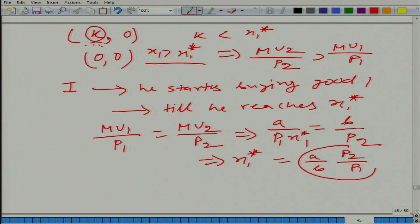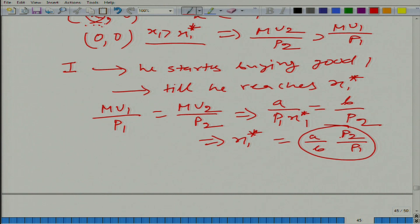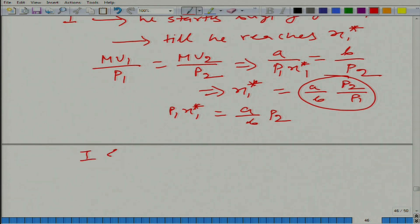So unless he accumulates this amount of good 1, he will not buy good 2. And to buy this much of good 1, how much income does he need? p1*x1 star, and that is a by b*p2. So what we are saying: if income is less than a by b*p2 and of course greater than 0, then he will buy - in this case x1 star is going to be equal to i by p1, because he will buy only good 1, and x2 star is going to be equal to 0.